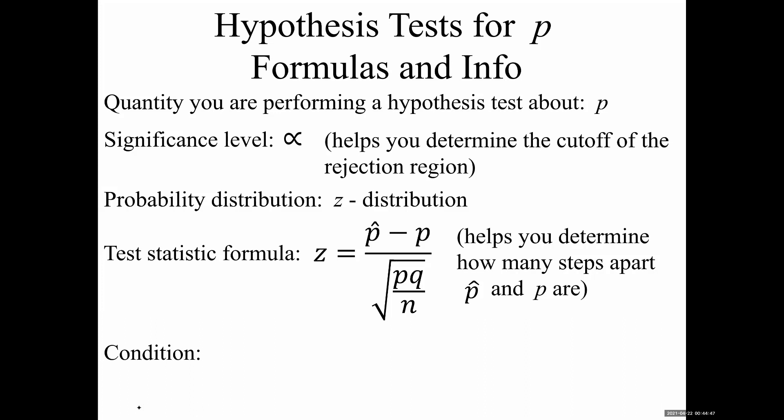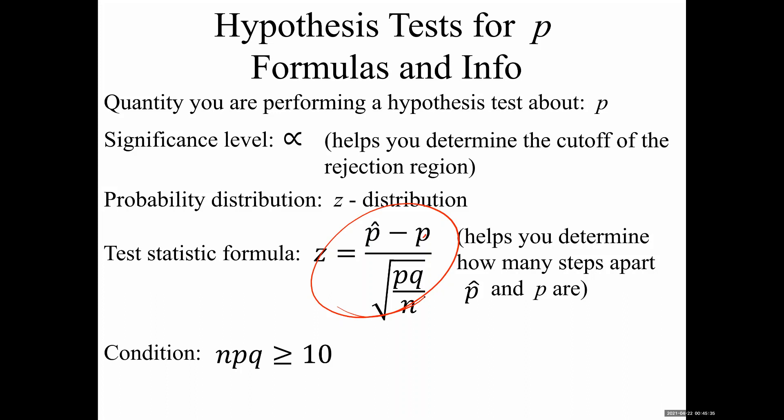There's a condition I won't ask you to check on quizzes or exams, but it may appear in online homework: the central limit theorem condition is that n times p times q must be greater than or equal to 10. You just multiply sample size times p (the king's claim), q is 1 minus p, and the answer should be at least 10 for the formula to work.